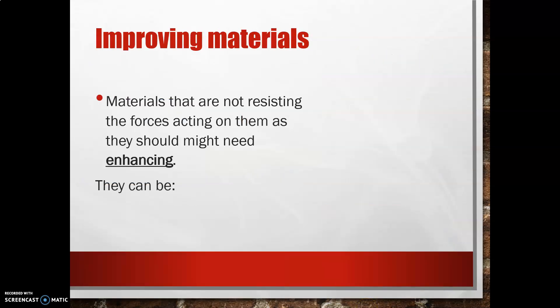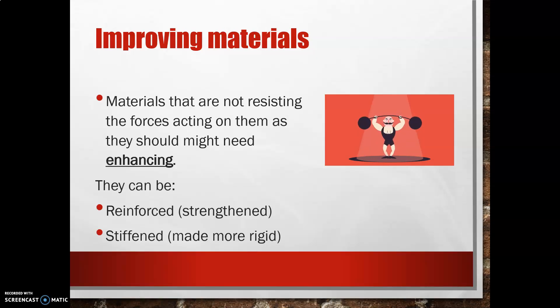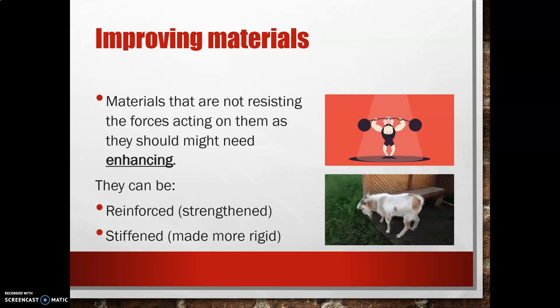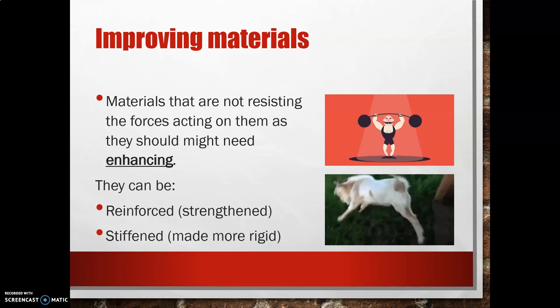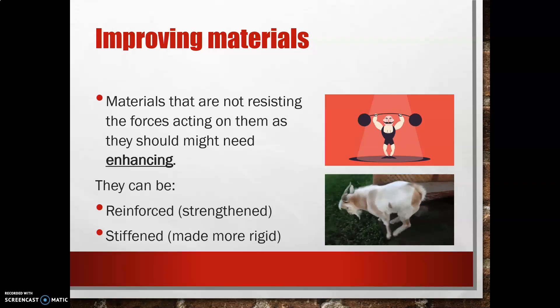Materials might not be able to resist the forces acting on them, and therefore they might need enhancing or improving. They can be reinforced — which basically means strengthening — or they can be stiffened, which means making them much more rigid, like this fainting goat. He's fine, by the way.